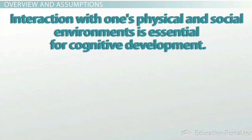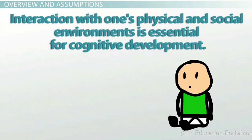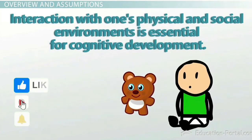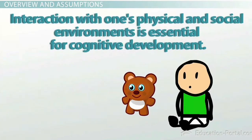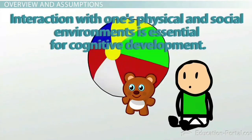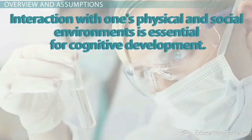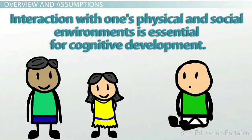The fourth assumption of Piaget's cognitive development theory is that interaction with one's physical and social environments is essential for cognitive development. According to Piaget, experimenting and manipulating physical objects is the main way children learn — for example, playing with new toys and objects or experimenting in a lab. The social environment is also critical, as social interactions allow for multiple perspectives, opinions, and introduction of new ways to approach a task or event.